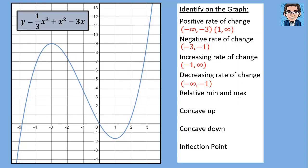Now let's locate the relative min or max — also called the local min and max. We've got a maximum here and a minimum here. The relative min and max is the point where the rate of change changes sign. Where it changes from a positive rate to a negative rate is a relative maximum, and where it changes from a negative rate to a positive rate is a relative minimum. So the maximum is at negative 3 — the full point is negative 3, 9 — and the minimum is at x equals 1, with the full point being 1, negative 1 and two-thirds.